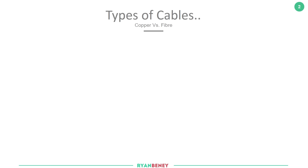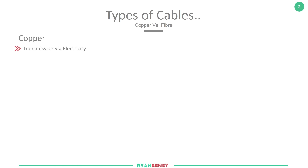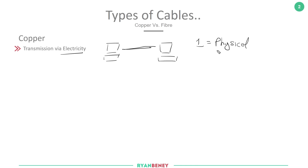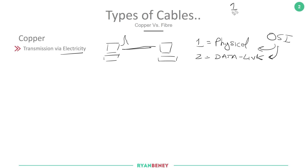First let's have a discussion around copper and fiber, the differences between them, and understand some of the reasons why we might want to use one over the other. Copper uses electrical signals to communicate, and these signals will be interpreted by both layer 1, the physical layer, and layer 2, the data link layer, in the OSI model. Between devices, an increase in voltage specifies a one in binary and a decrease in voltage identifies a zero in binary.